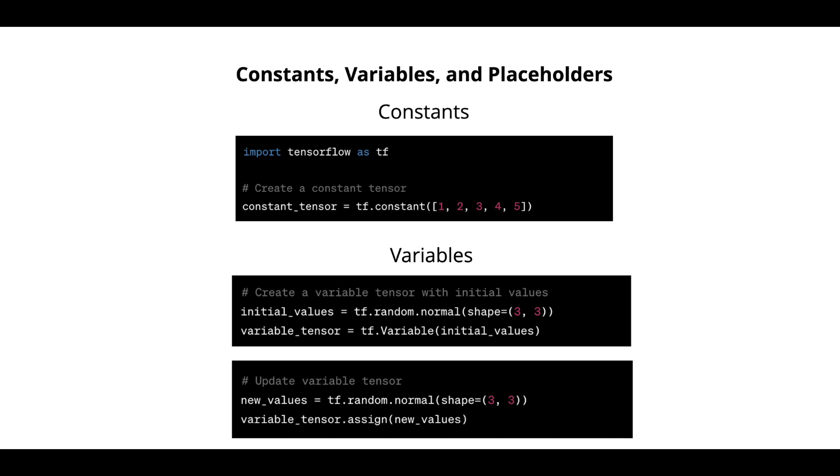You can give a name, initial values, tf.random.normal shape equal to 3,3. Then variable tensor is equal to tf.variable initial values. So you can change that.